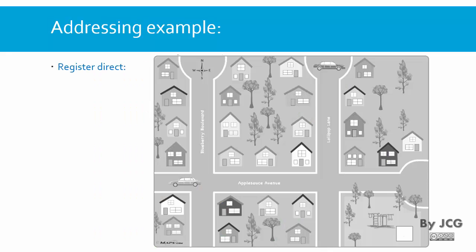Imagine you have a neighborhood — you have three streets — and we're going to see the three types of addressing. One is going to be the register direct, the other one is going to be the direct address, and finally we're going to see the indirect addressing with this example.